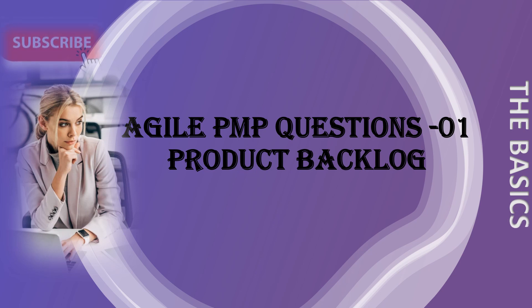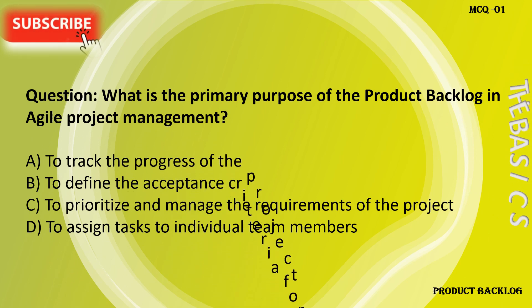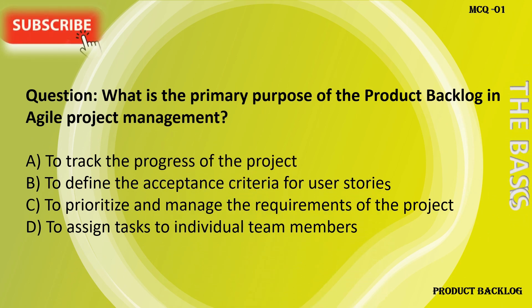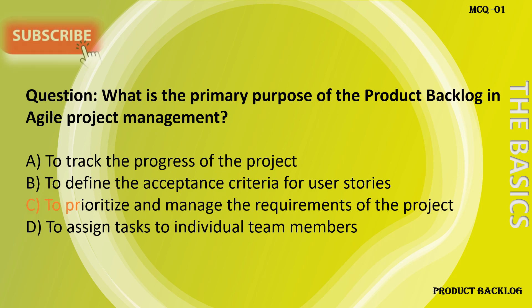What is the primary purpose of the Product Backlog in Agile Project Management? A. To track the progress of the project. B. To define the acceptance criteria for user stories. C. To prioritize and manage the requirements of the project. D. To assign tasks to individual team members.